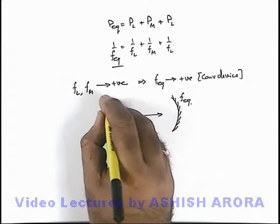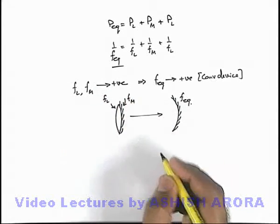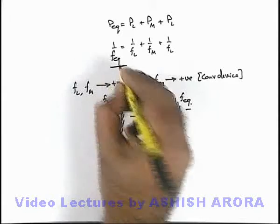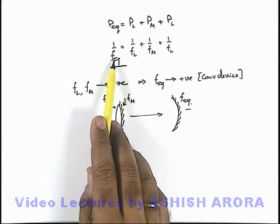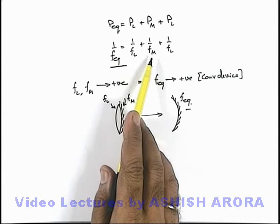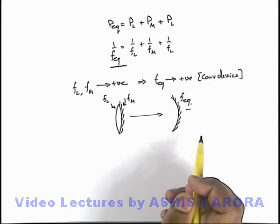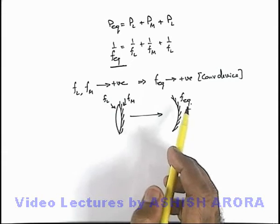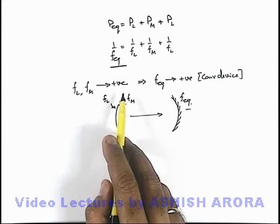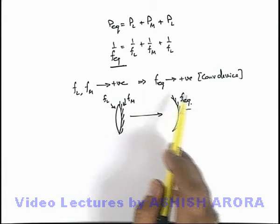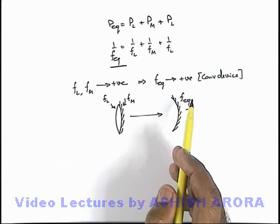If this mirror has focal length f_L and this mirror has focal length f_M, then f_equivalent is given by this relation. In a specific case, if the value of f_equivalent comes out to be negative, that means the system must be replaced by a diverging or convex mirror, because as per the sign convention we are using, for diverging devices the power or equivalent focal length is taken as negative.